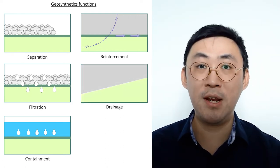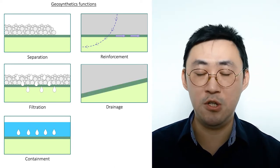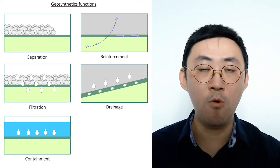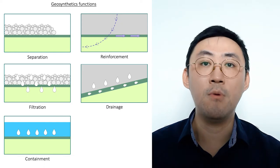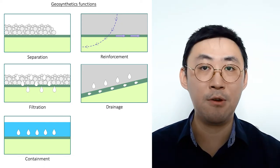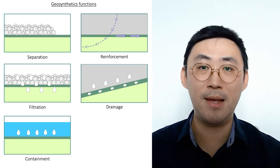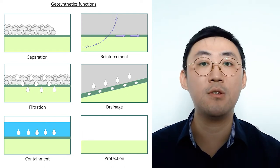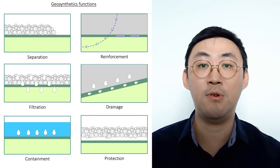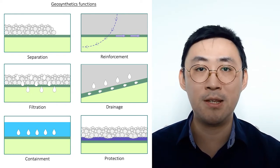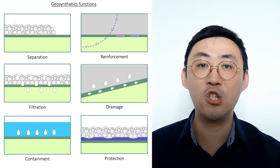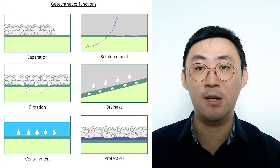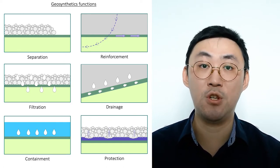The fifth function is drainage. Drainage is to provide an in-plane flow path for movement of any fluids, including water, liquid, or even gases. Geosynthetics materials are used here to convey liquid or gas by providing a movement passage within the material itself. The sixth and last function is protection — to protect the underlying materials from any damage. Geosynthetics materials used here are typically non-woven geotextiles to prevent damage to any underlying materials installed underneath.